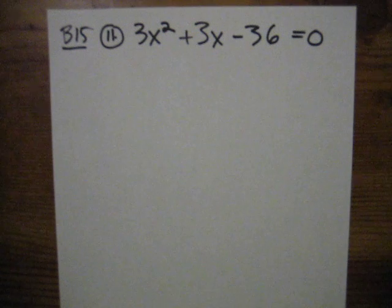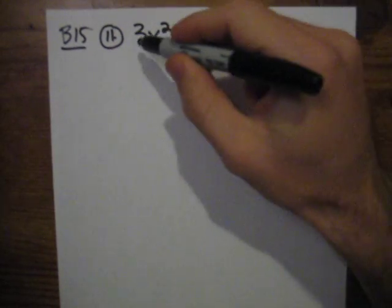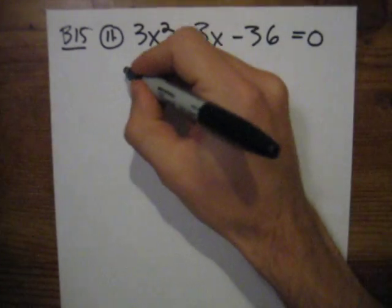The factoring process, first step will always be looking for the greatest common factor. The greatest common factor in this case would be 3. They all have a factor of 3, so I can factor that out.